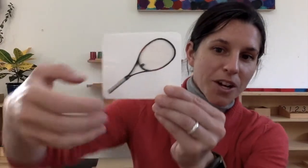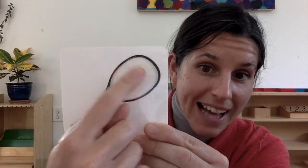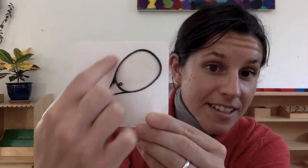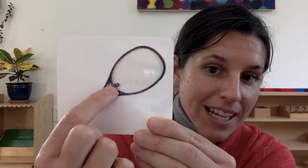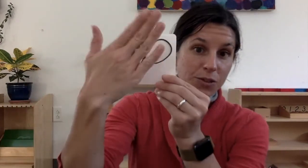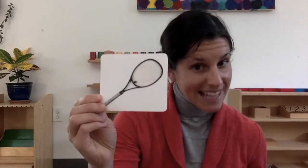This is the handle where you hold it and these are the strings of the racket. We call this the head of the racket and that's a little vibrating piece that helps with the strings not to bounce too hard. You hold the racket and you hit the ball. Pretend you have your racket and hit the ball. Tennis racket—we use it to play tennis.